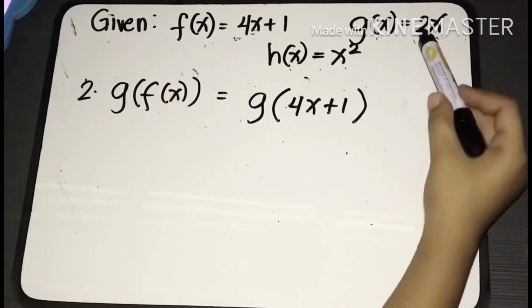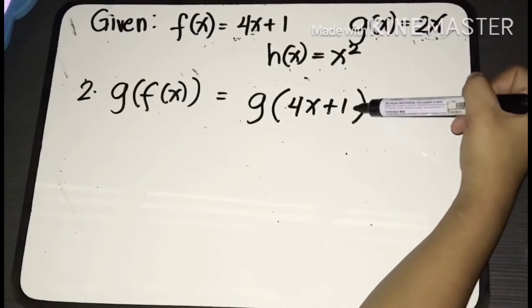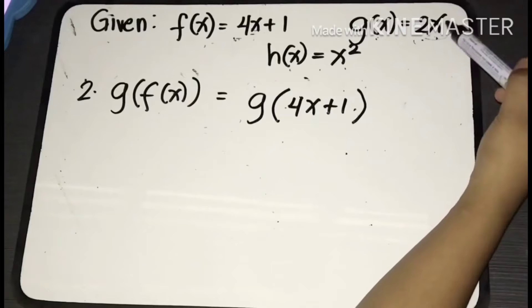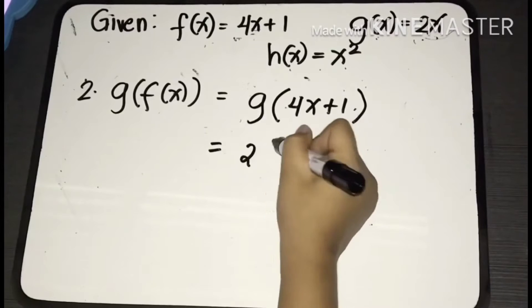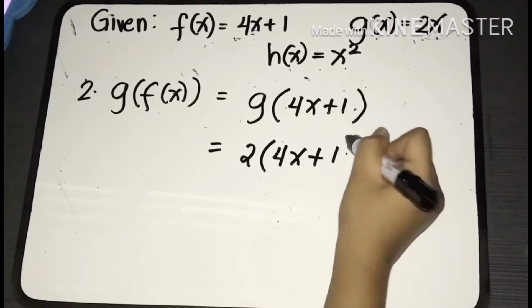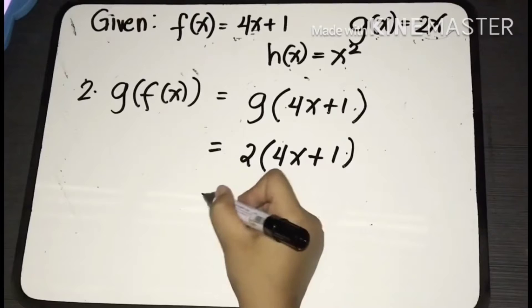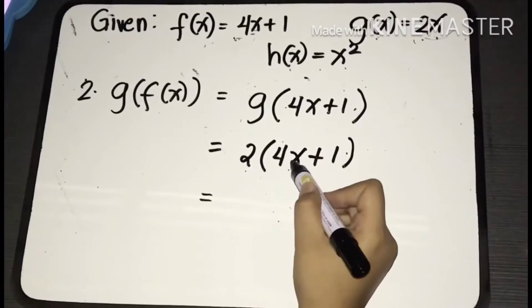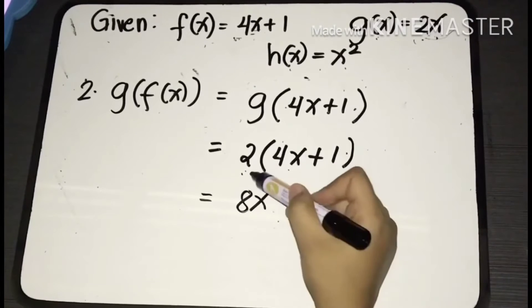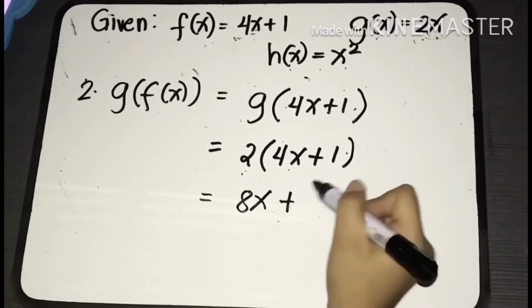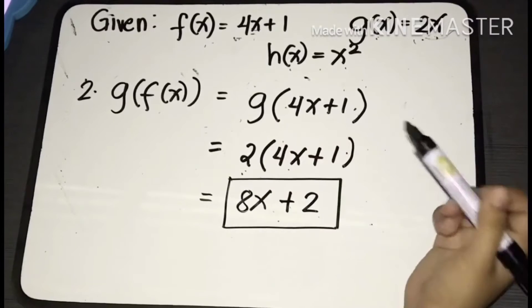Now look at the function g — it has the variable x. We are going to substitute the value of f of x into the variable of the function g. Substituting, we'll have 2 multiplied by (4x plus 1). Distributing 2: 2 times 4x equals 8x, and 2 times 1 equals positive 2. That is the final answer for g of f of x: 8x plus 2.